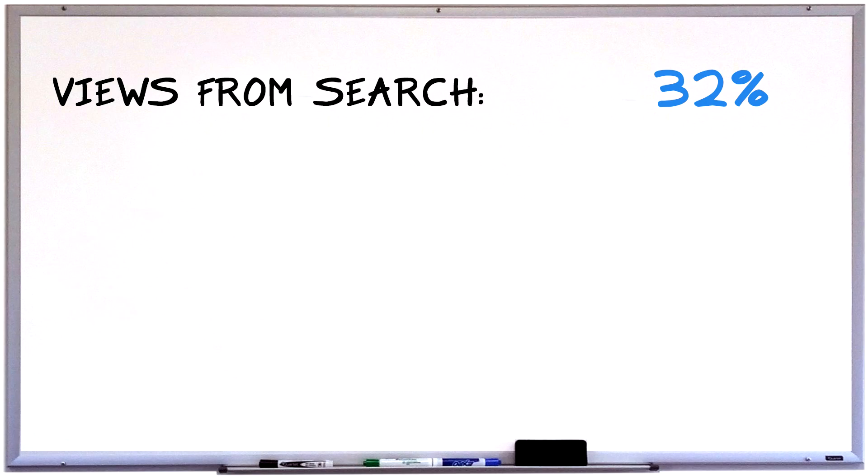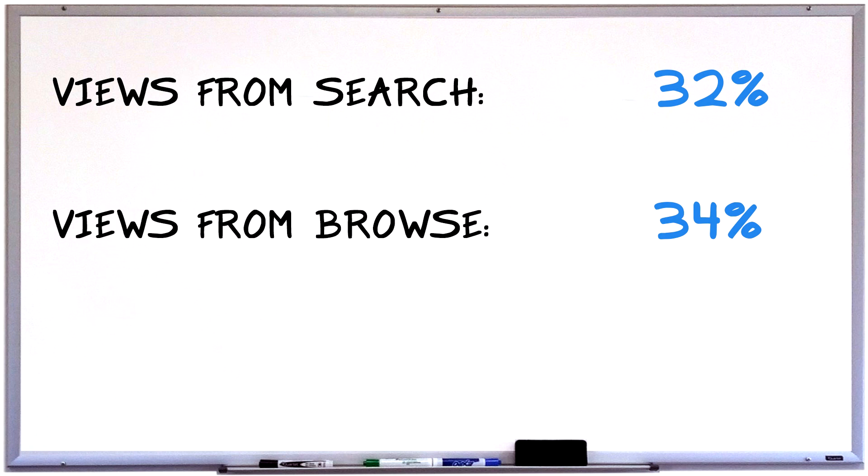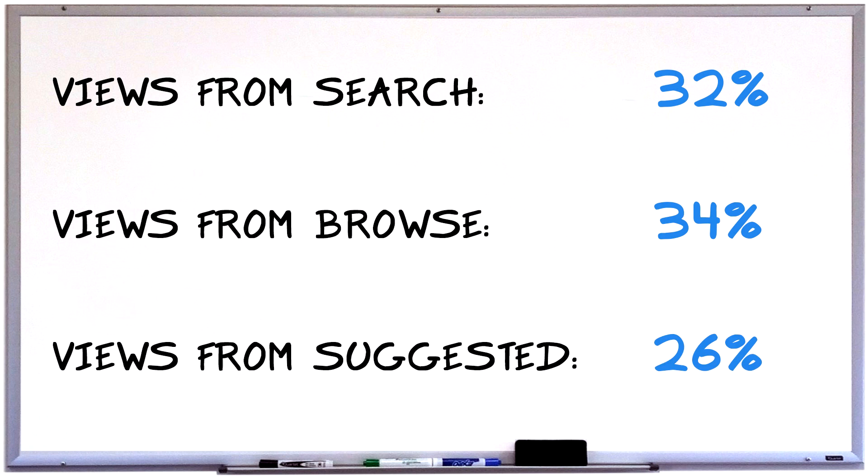Since I've been on YouTube for a long time and have worked with over a hundred different channels, I took 10 very different channels — a gaming channel, a makeup channel, a vlogging channel — and merged all their analytics together to get an average. About 32 percent of all views come from YouTube search, 34 percent come from browse features, and 26 percent come from suggested videos.